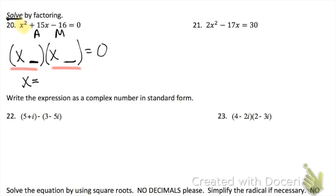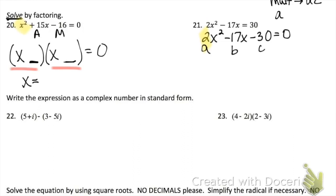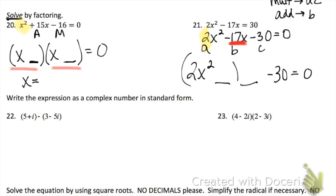Number 21 is similar — start by moving the 30 over. However, this is not level 1 factoring because there's a number out front. Check for a GCF. If you don't have a GCF, you'll have to factor by grouping — find what multiplies to A times C and adds to B. Rewrite your BX term with those two numbers, putting 2x² first. Group the first two terms, group the last two, pull out a GCF from each group, and rewrite. Your final answer is X equals a number and another number — one of those will be a fraction.